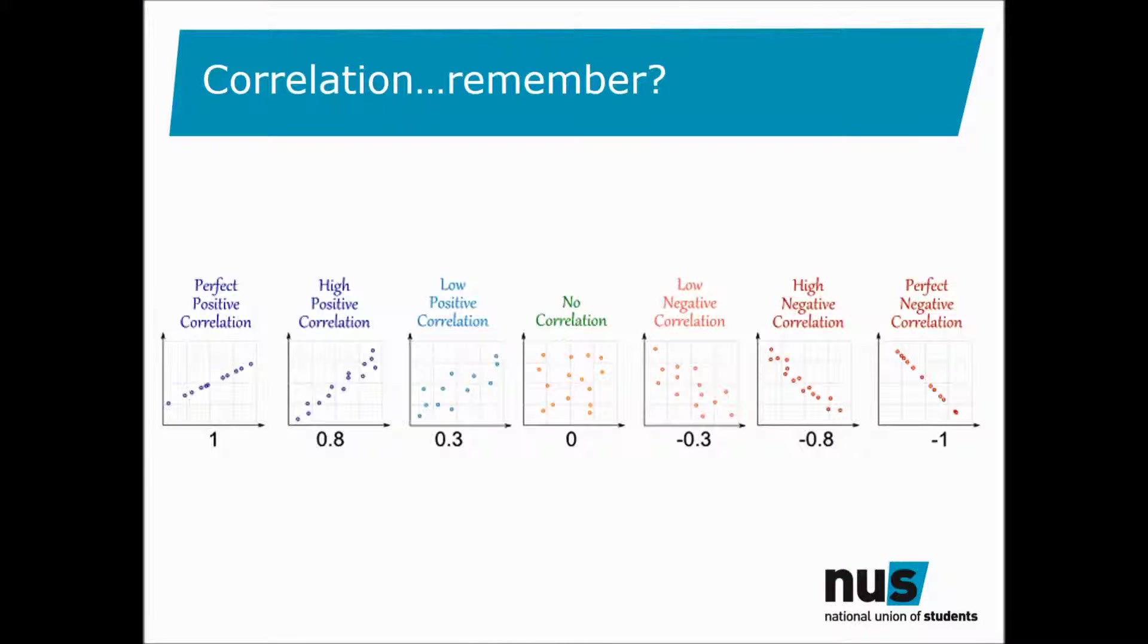Just to refresh your memory, here's a reminder of what we mean by correlation. Correlation measures the direction and strength of an association between two variables, and can be seen by plotting the two variables on a scatterplot. As well as this visual representation, correlation is measured using a correlation coefficient, usually referred to as R.